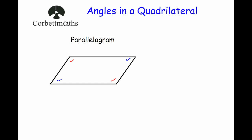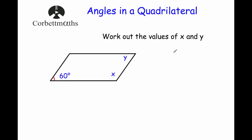Here we've got a parallelogram and we've been asked to find the sizes of angle X and angle Y. We know that one angle is 60 degrees, so the opposite angle Y will also be equal to 60 degrees. To find angle X, we're going to add the two angles we know — the two 60s — together, then take that away from 360 to find what's left for the other two angles, and then halve it to get X.